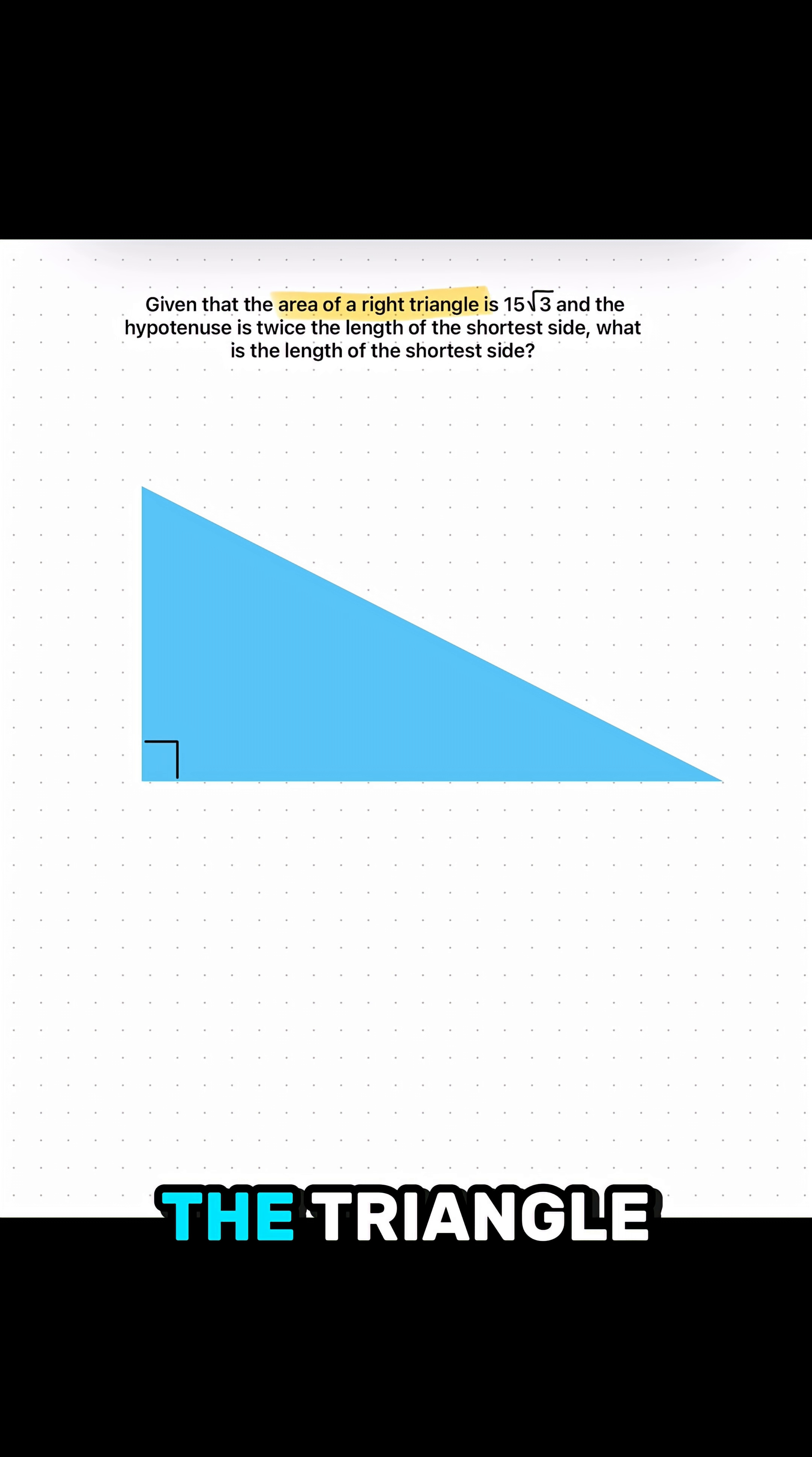You're given the area of the triangle and you're also given that the hypotenuse is twice the length of the shortest side.